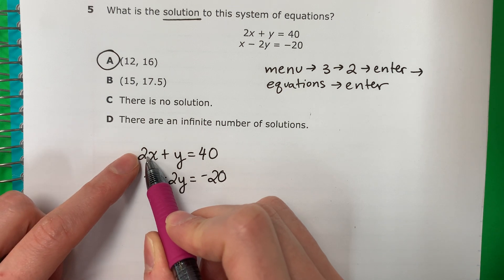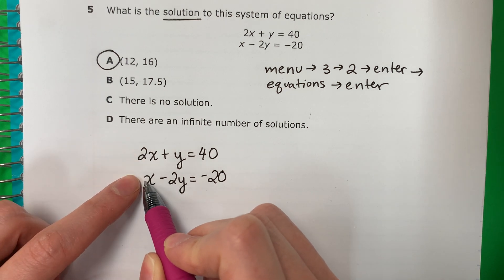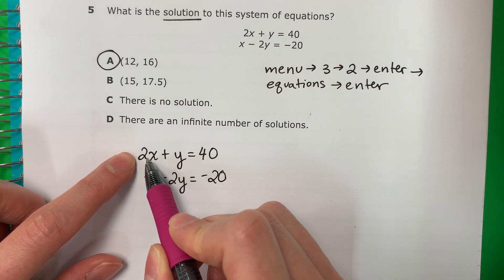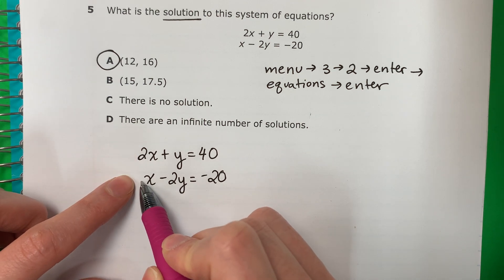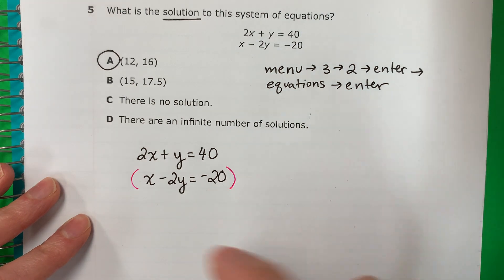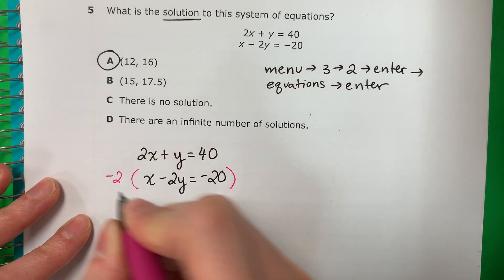So once again, this is positive 2. I want a negative 2 here. Este es positivo 2x, entonces quiero el mismo número pero opuesto. Entonces aquí quiero negativo 2. So what I'm going to do is I'm going to multiply the whole thing. Voy a multiplicar todo by negative 2 por negativo 2.